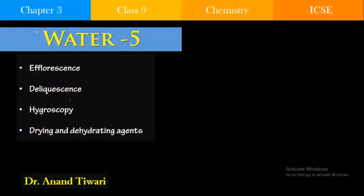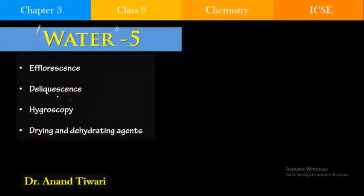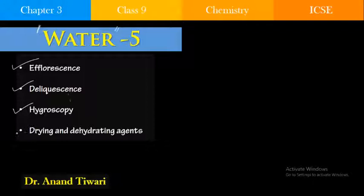Hello students. In our earlier class, we discussed about crystals and crystallization — what is a crystal, how we can make crystals by the process of crystallization and seeding, what is the meaning of water of crystallization, and hydrated and anhydrous substances. Today we are going to discuss about certain properties like efflorescence, deliquescence, hygroscopy, and what are the drying and dehydrating agents.